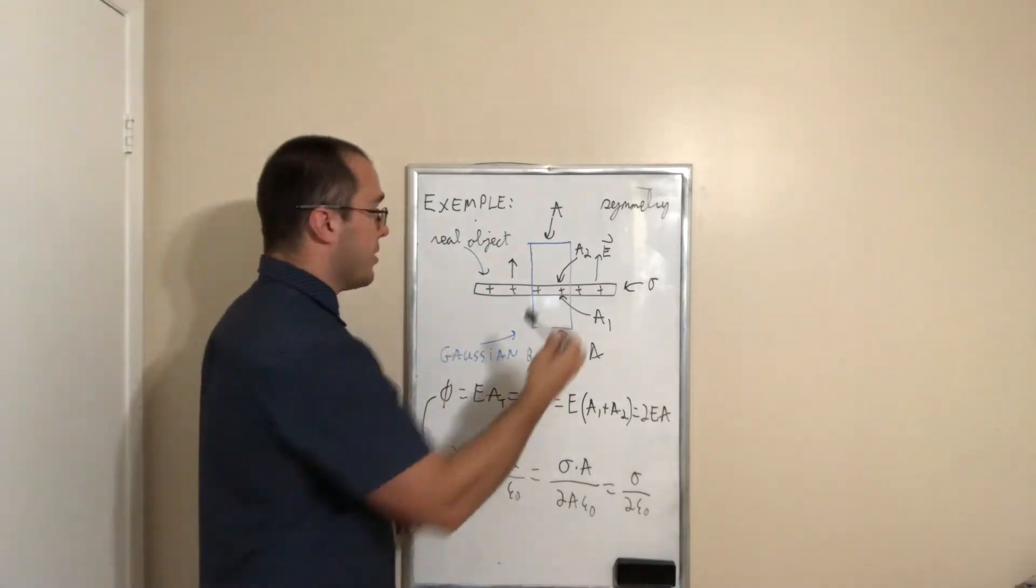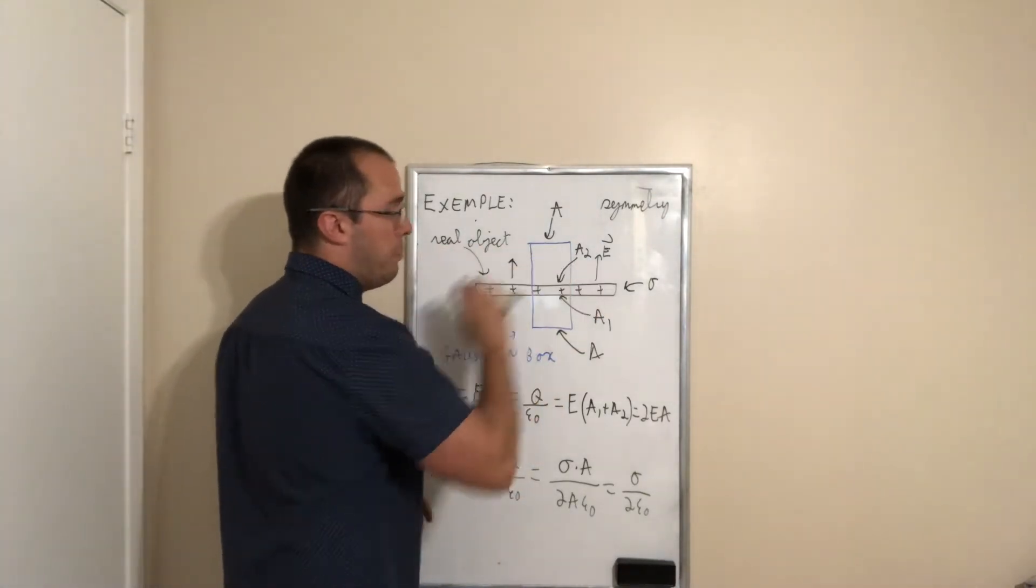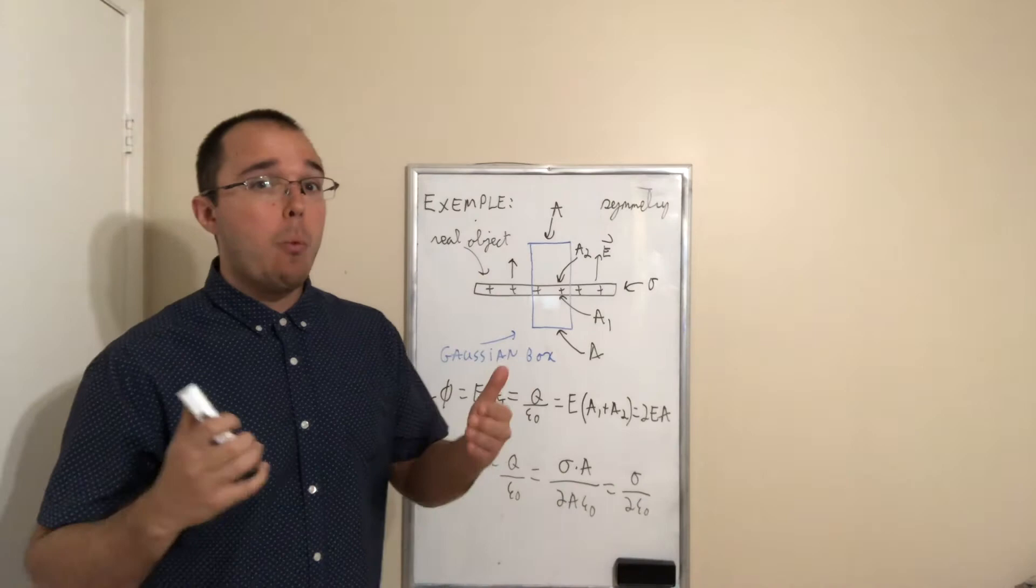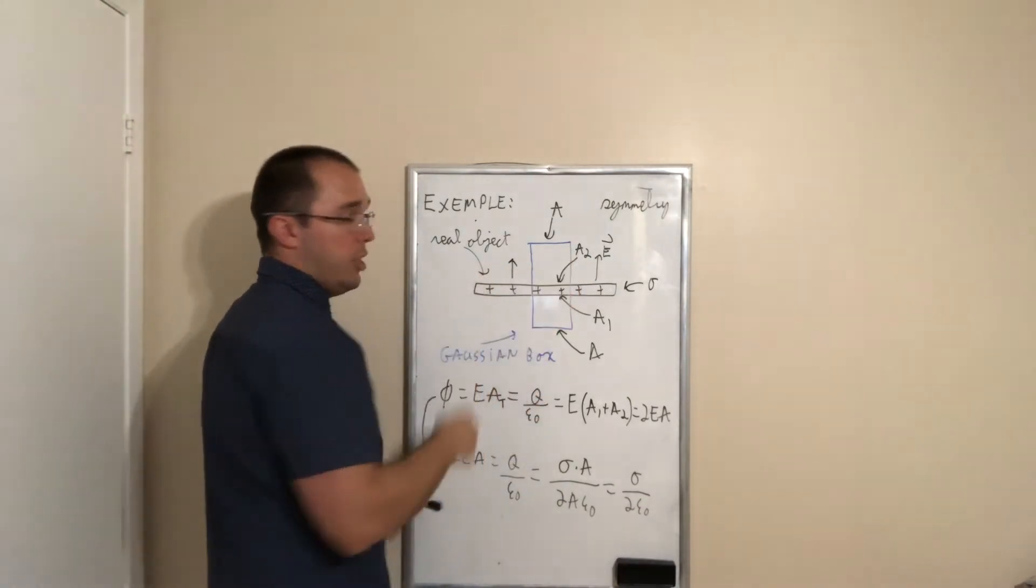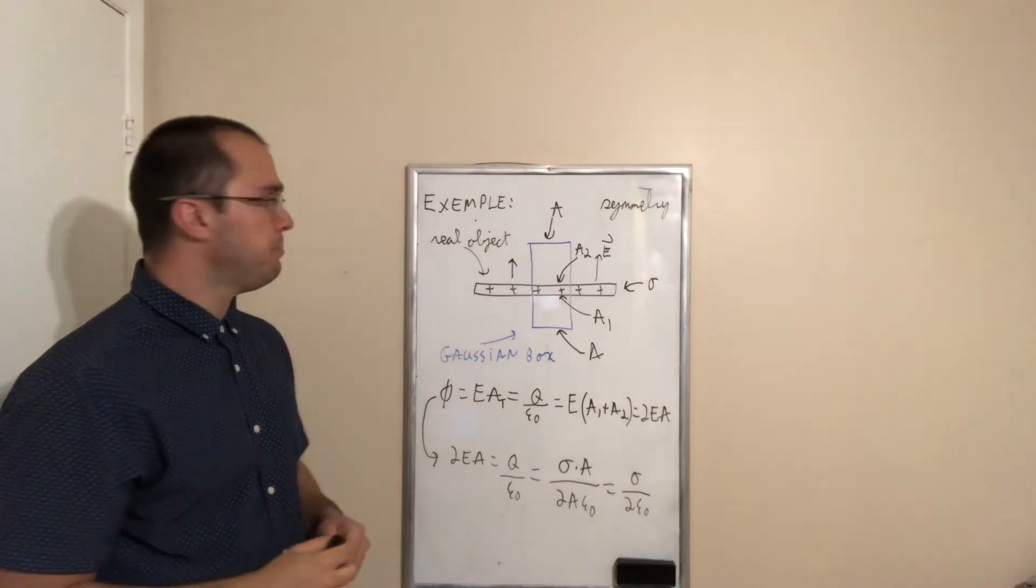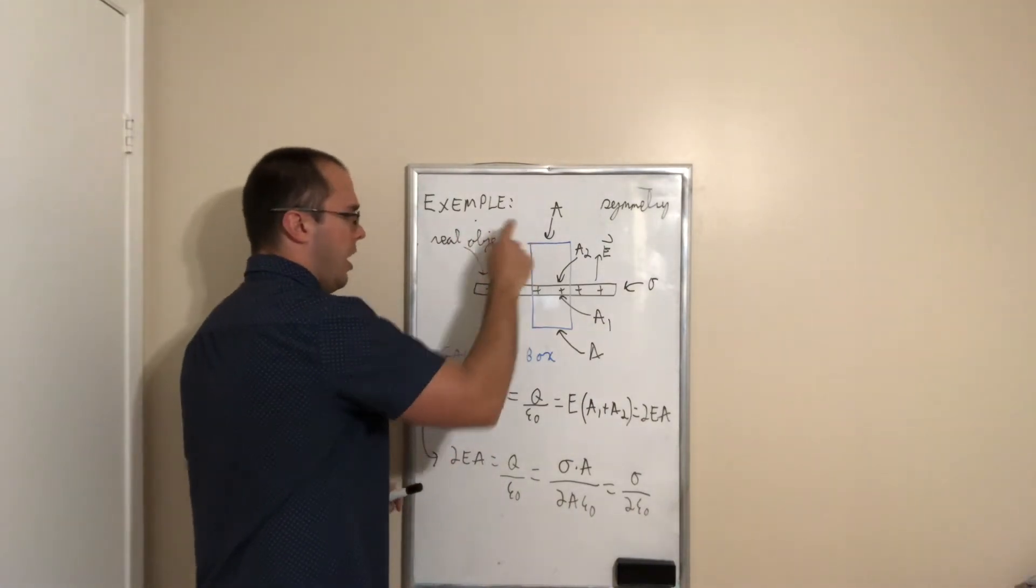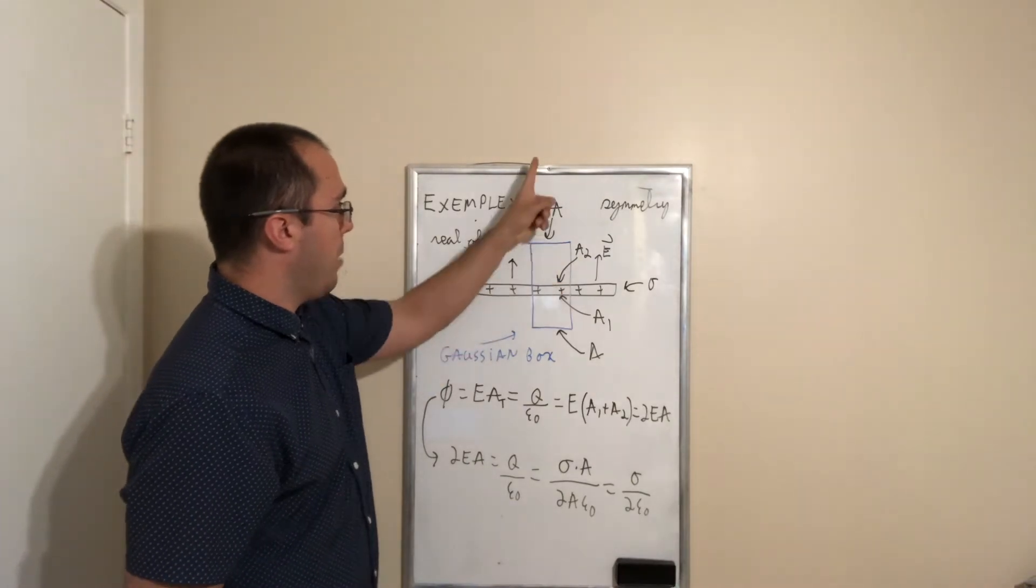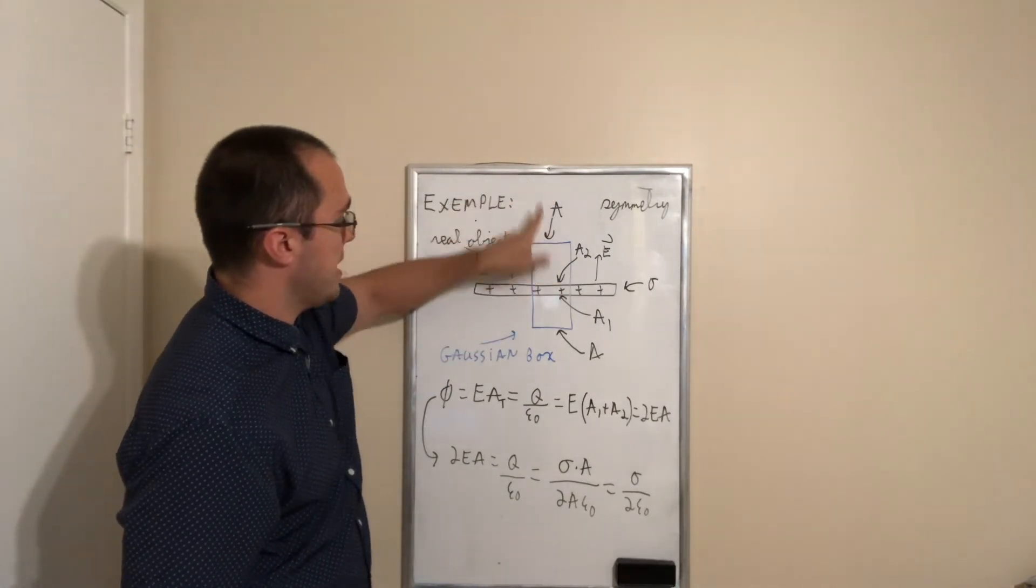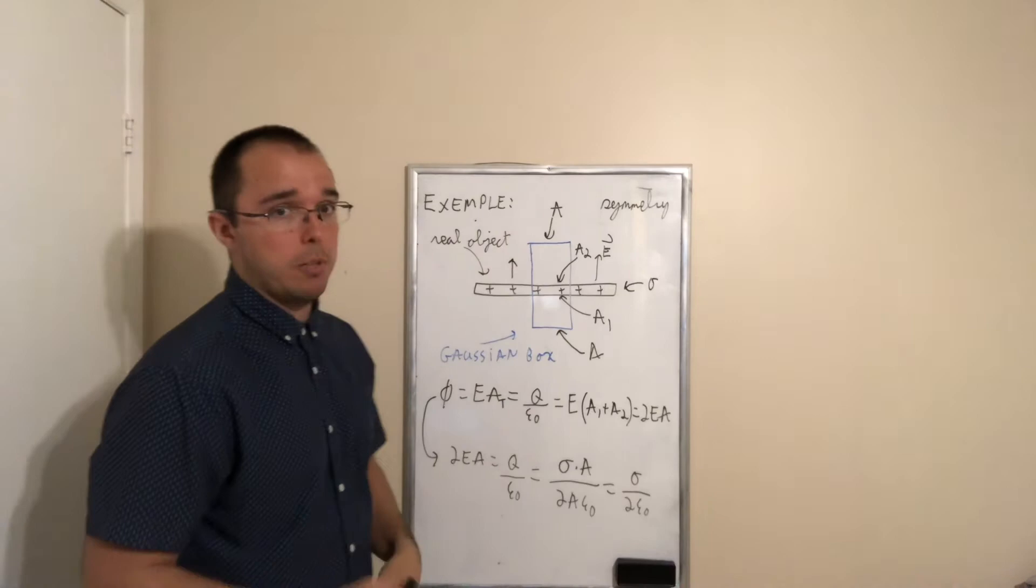Now, the important part here is there's no side component of the electric field. What that means is there's no electric flux going on either side. Now, in the case of planar symmetry, that means there's an electric flux going up here, through this area, but also through the bottom area.